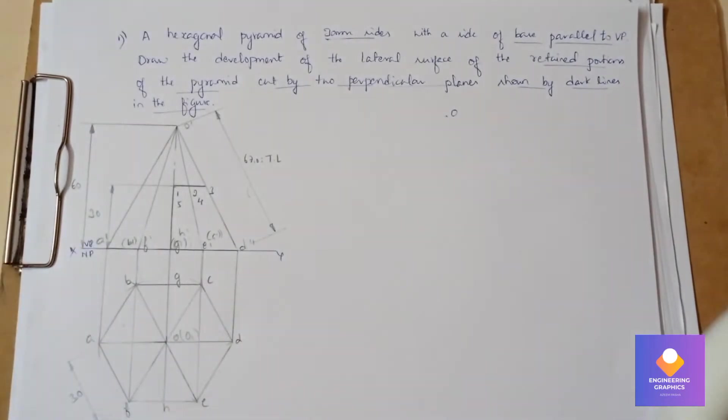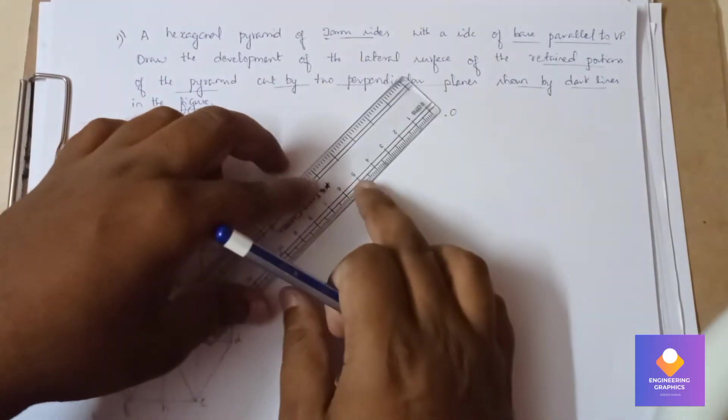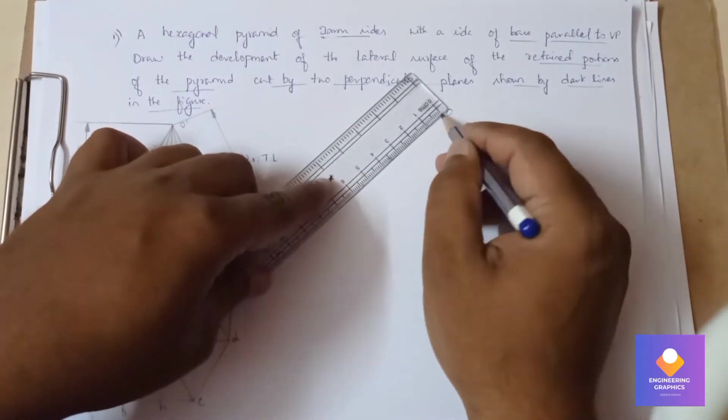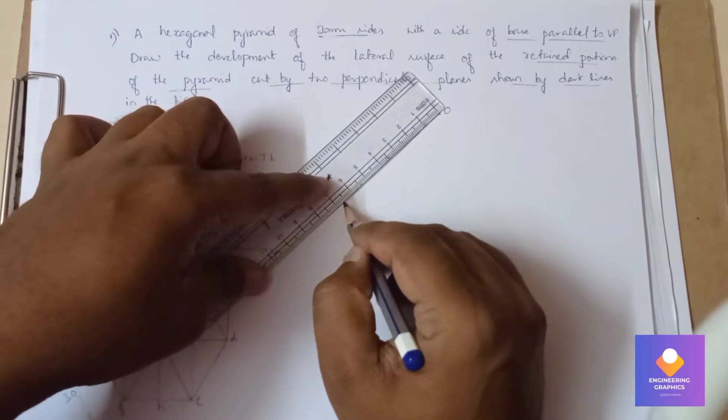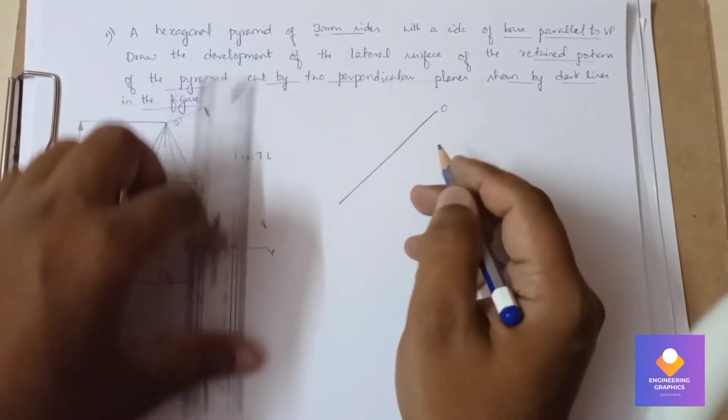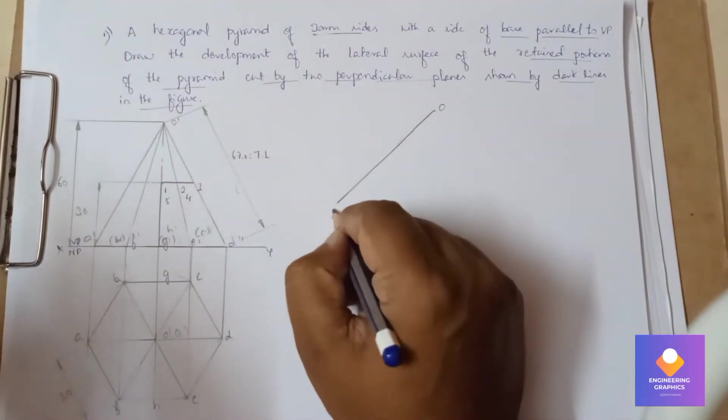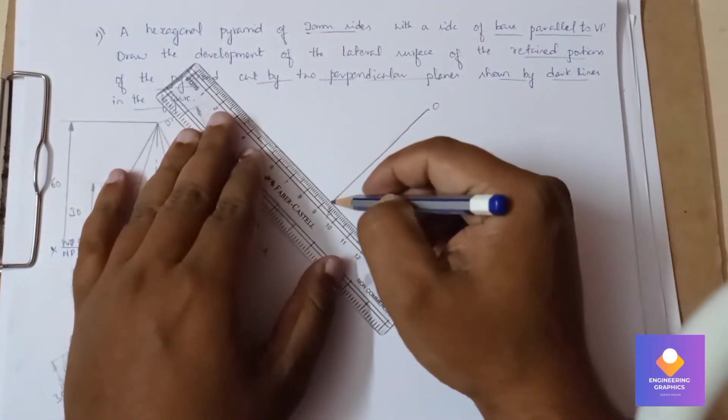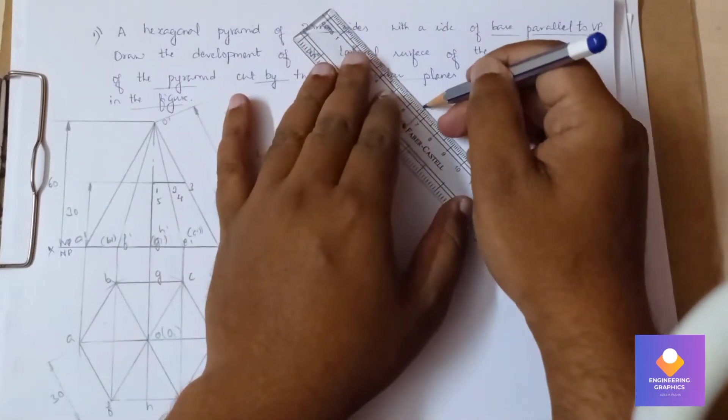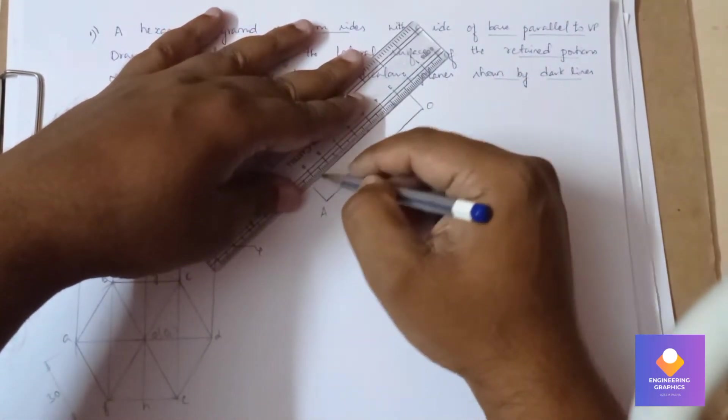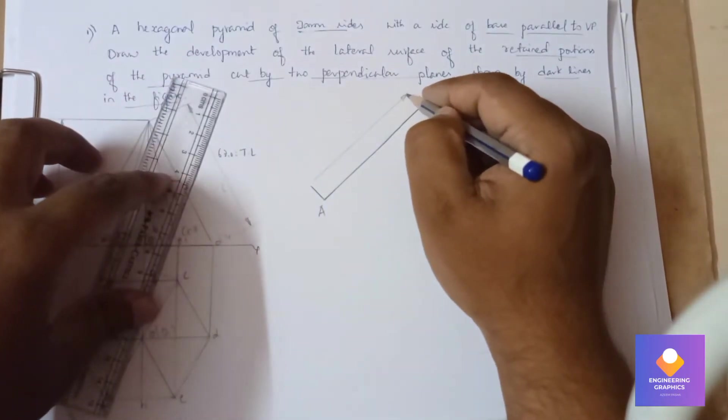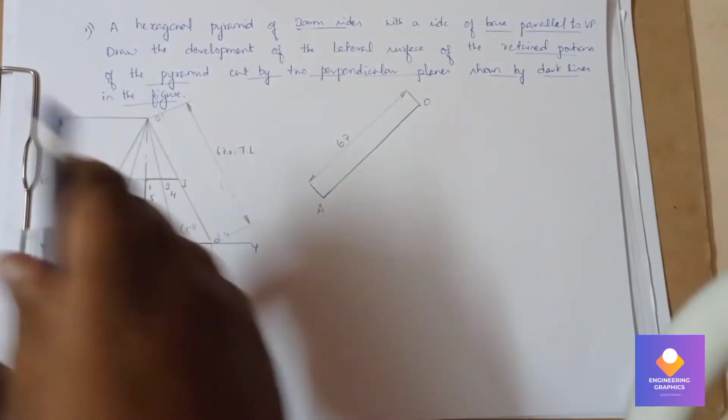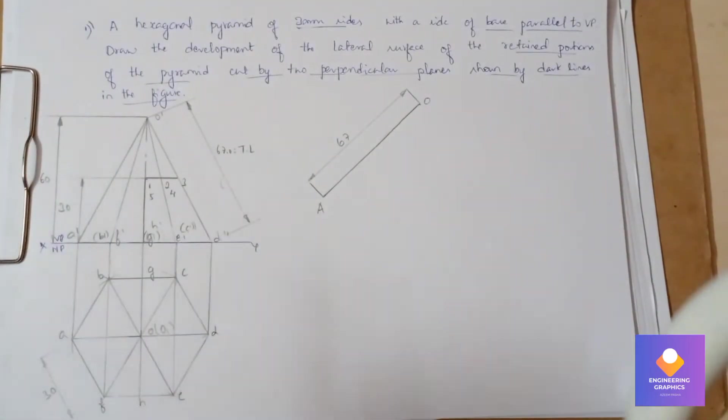The true length is given as 67mm, so we draw a line of length 67mm here. Then with the help of a compass, we are going to draw an arc. You can show the dimension, that is 67mm, and we can cut an arc here.